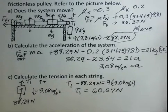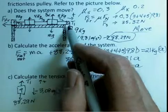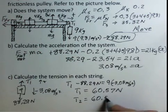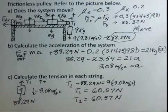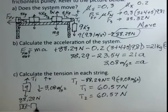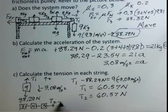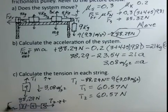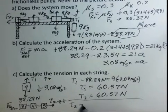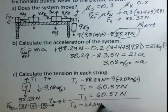Do we need to separately calculate T2? No — it's the same massless string, so tension is the same throughout: 60.57 newtons. But let's verify using the three table objects (3, 4, 5 kg) as the system. T2 to the right minus kinetic friction of 23.54 newtons equals 12 kilograms times +3.08 m/s².